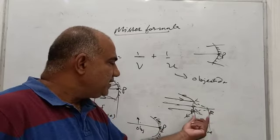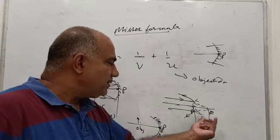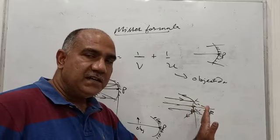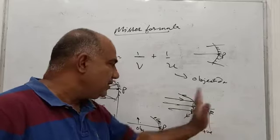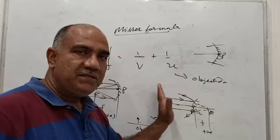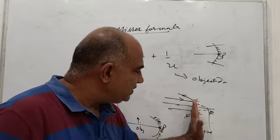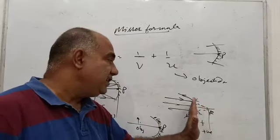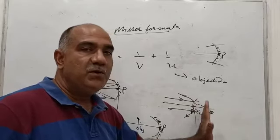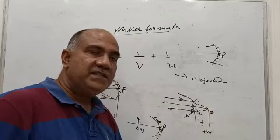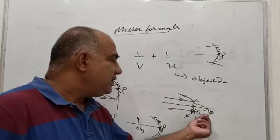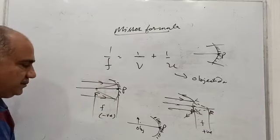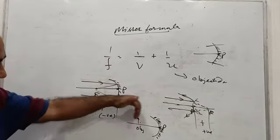The distance between the pole and the principal focus of a convex mirror is its focal length. Since the principal focus of a convex mirror lies to the right of the pole — in the same direction as the incident ray travels from the object — this distance is assigned a positive sign. So the focal length of a convex mirror is always positive. The focus of a concave mirror is real, while that of a convex mirror is virtual.